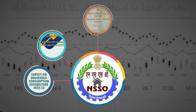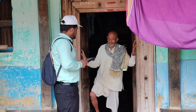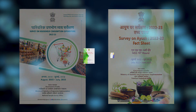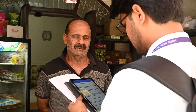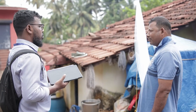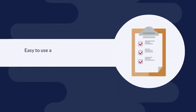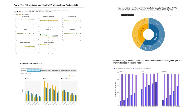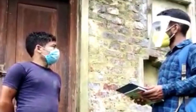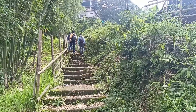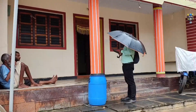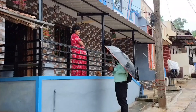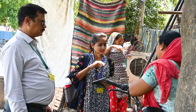NSSO follows a well-laid-down procedure right from the inception of a survey to dissemination of results. The data is captured through Computer Assisted Personal Interviews (CAPI), having in-built consistency checks for significant improvement in data quality. Further, despite the obstacles of challenging geographical terrains, extreme weather conditions and non-response, NSSO remains committed to gathering qualitative data.